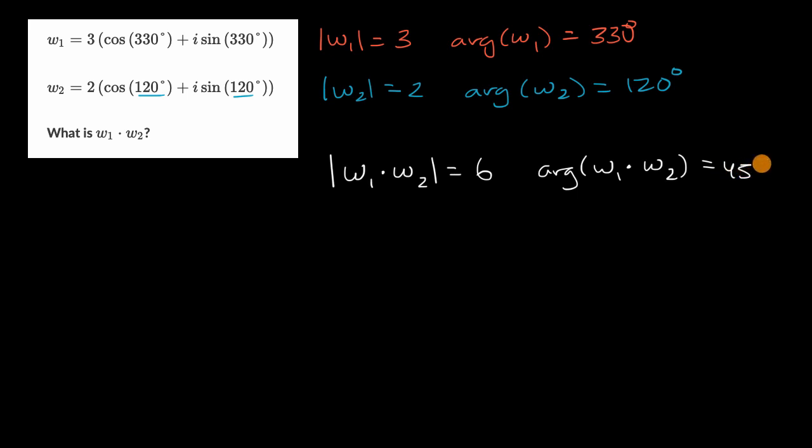So this is equal to 450 degrees, which is more than a complete rotation. And so if we wanted to give it an angle between zero and 360 degrees, if we just subtract 360 from that, that is going to be equal to 90 degrees.